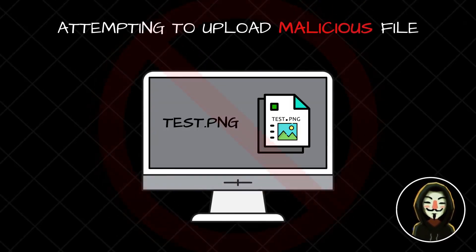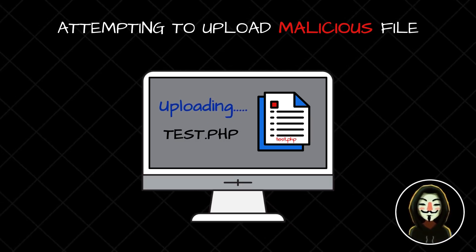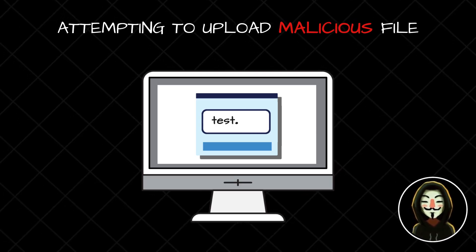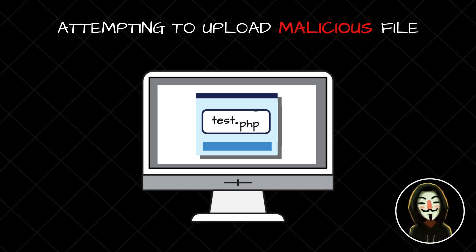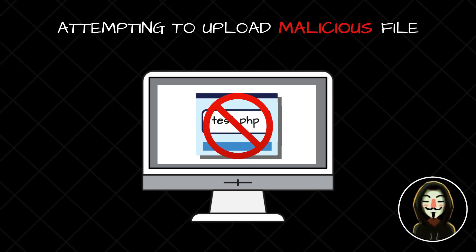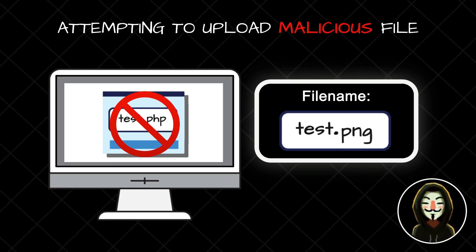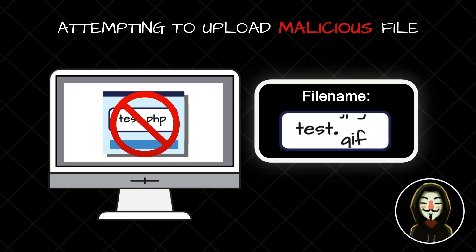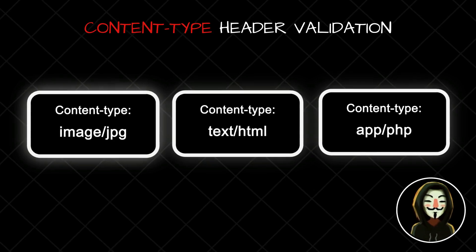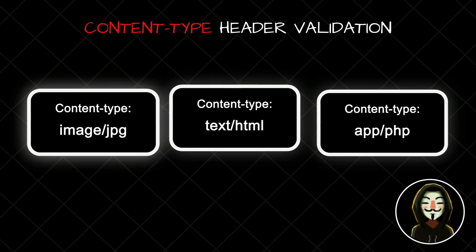Now let's take another scenario where instead of test.png we try to upload a file named test.php. The server again checks the extension after the dot — it finds .php, verifies whether it is an image file extension, determines it is not, and blocks the upload. Most applications on the internet check the file extension, but there is one more important value that needs to be checked, known as the content type.